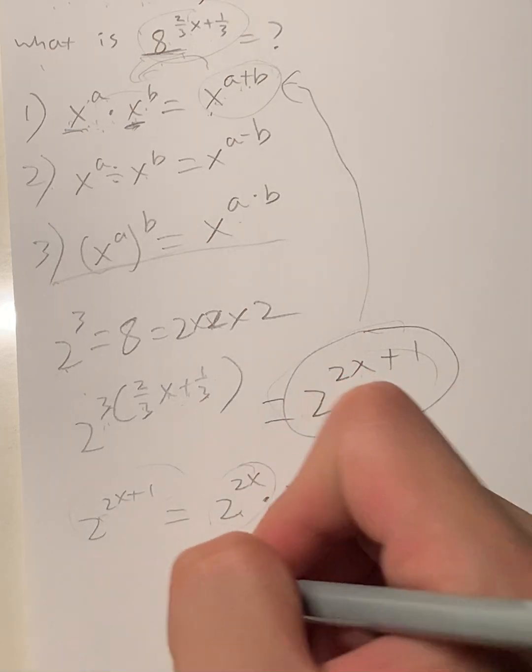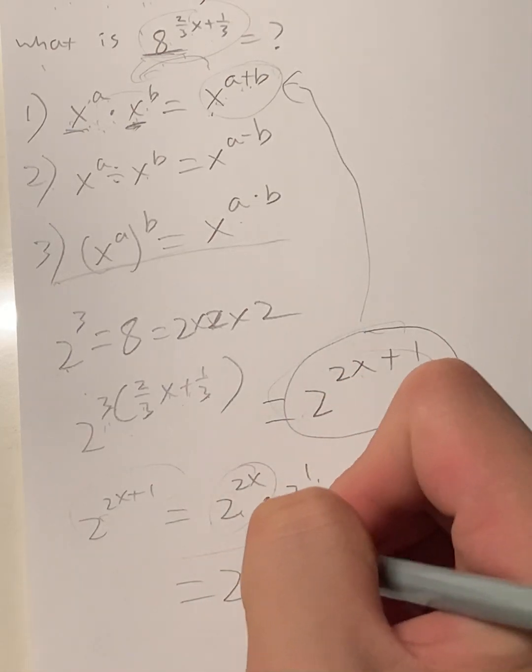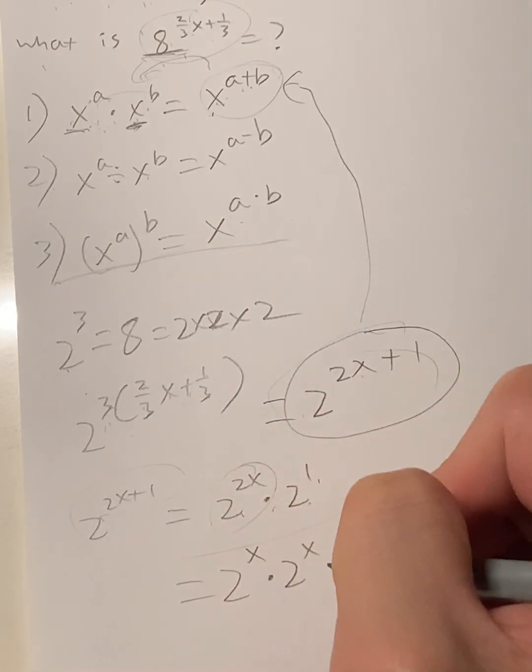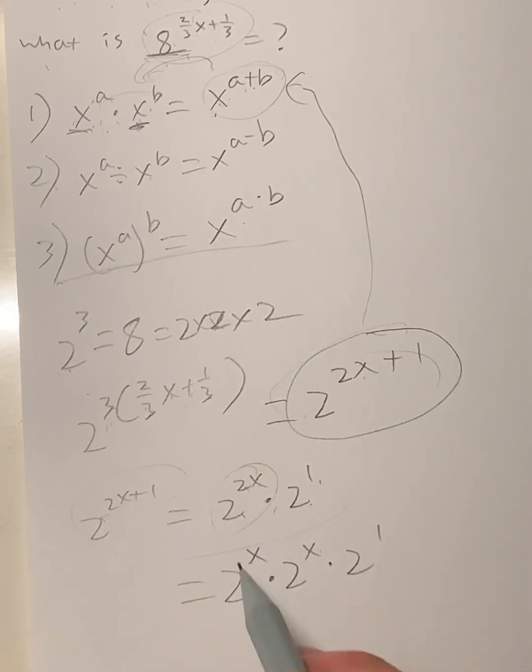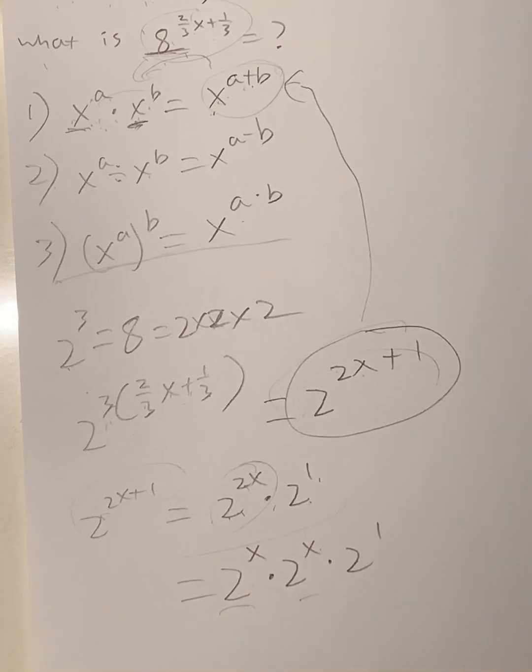And now let's break down even further. Let's break down 2^(2x). This equals 2^x times 2^x times 2^1. So 2^(2x), x plus x is 2x. We have the same base of 2, and that's it.